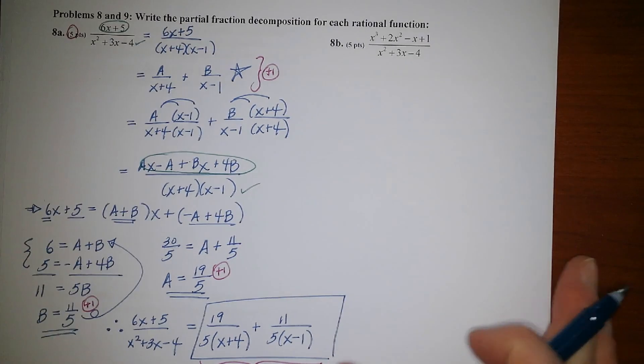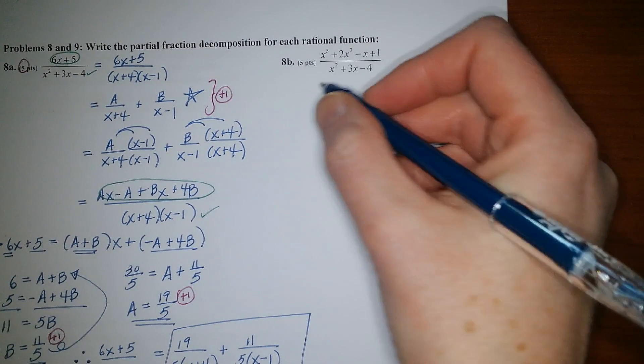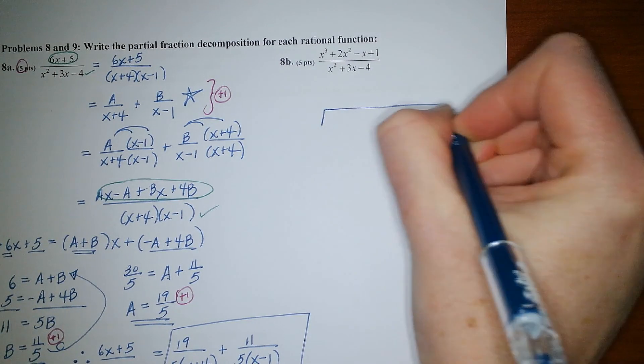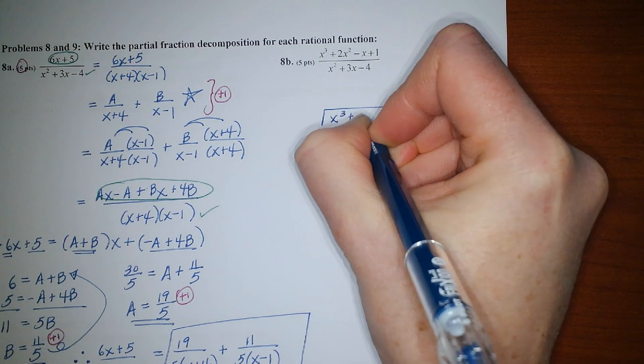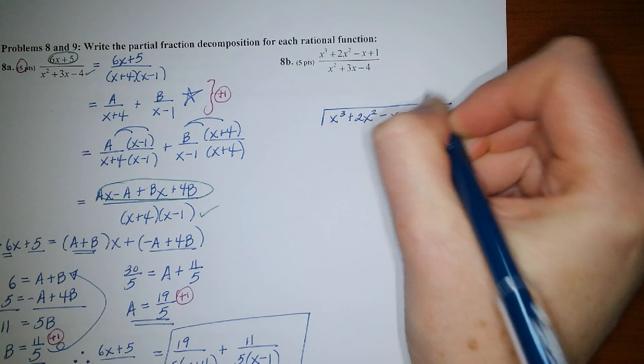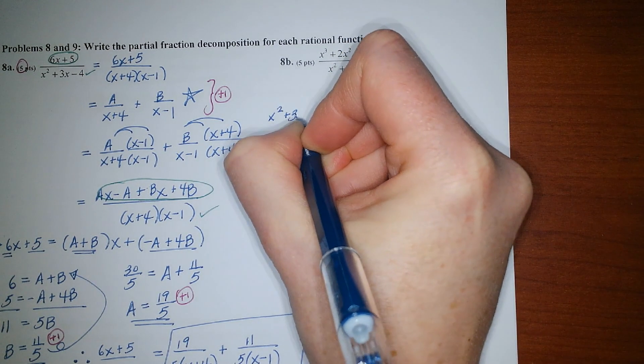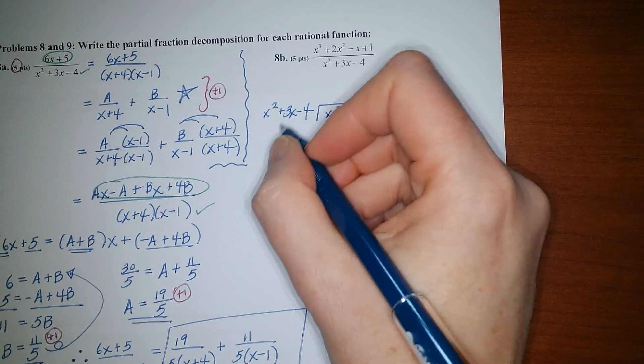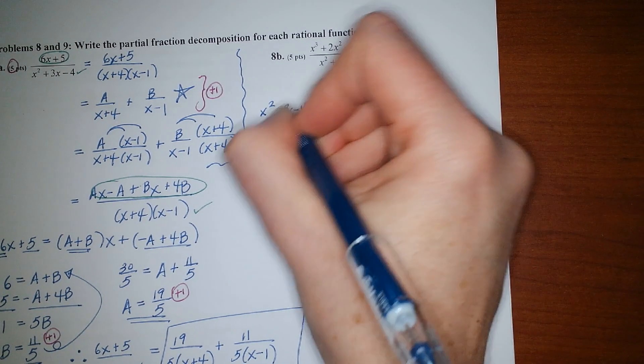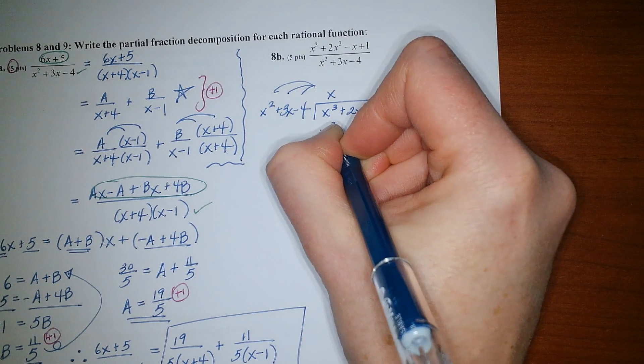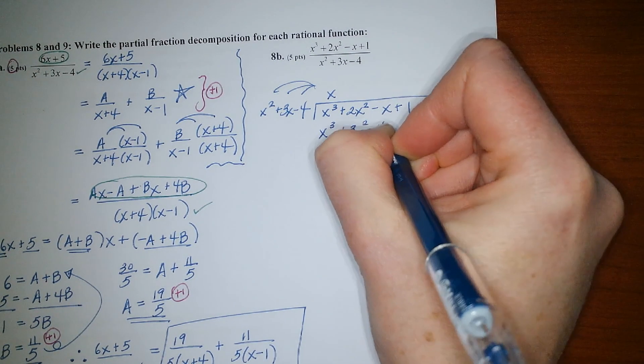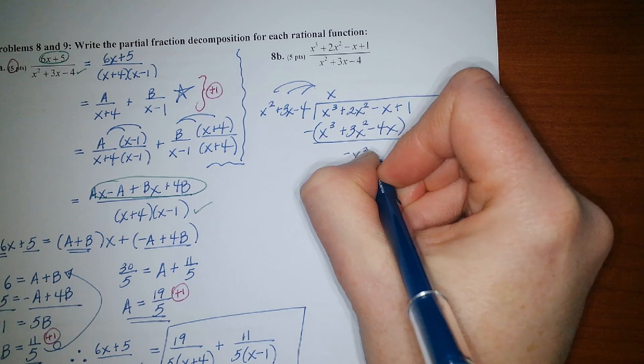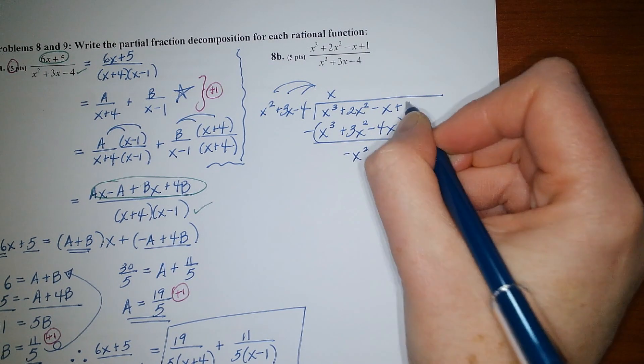All right, my friends. Now let's look at part B. Anytime you have an improper fraction, you want to make sure that you write it in mixed fraction form using long division. So let's get started. So x squared times x, and then let's distribute that completely here. So x cubed plus 3x squared minus 4x. And subtracting that, we'd get negative x squared plus 3x. And I'm going to drop the plus 1 there. Okay.